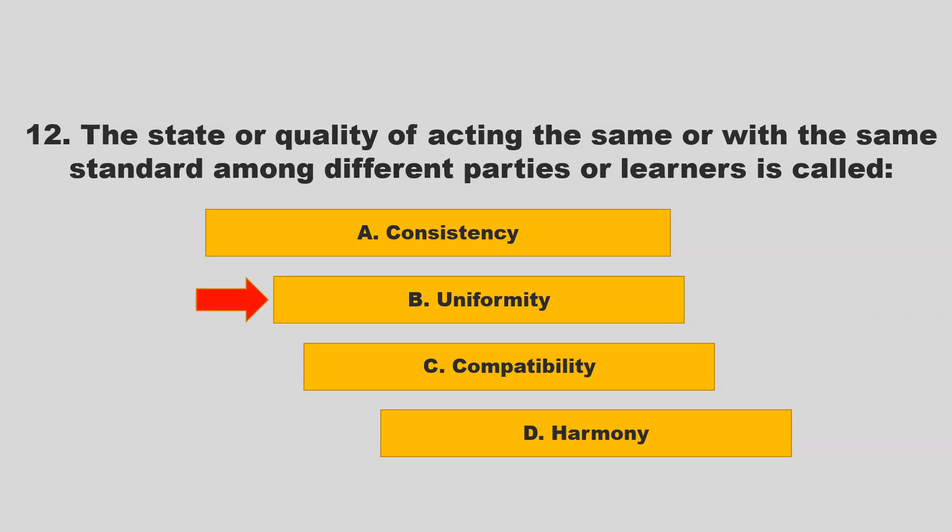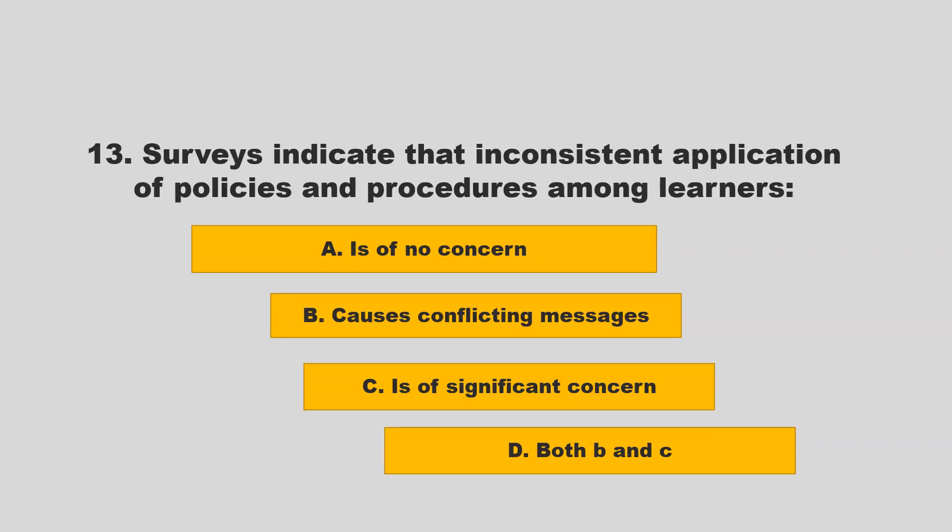The state or quality of acting the same or with the same standard among different parties or learners is called uniformity. Other options included consistency, compatibility, and harmony. If you chose B, uniformity, you are correct.